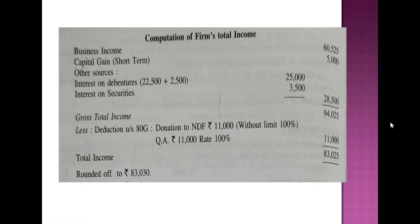For the computation of the firm's total income, we take the business income of 60,525, add capital gain income of 5,000, then income from other sources: interest on debentures — adding back TDS to get the gross amount of 25,000 — and interest on security of 3,500. The total income from all heads gives a gross total income of 94,025. Deducting the Section 80G deduction of 11,000 gives a total income of 83,025, which rounded off to the nearest ten is rupees 83,030.